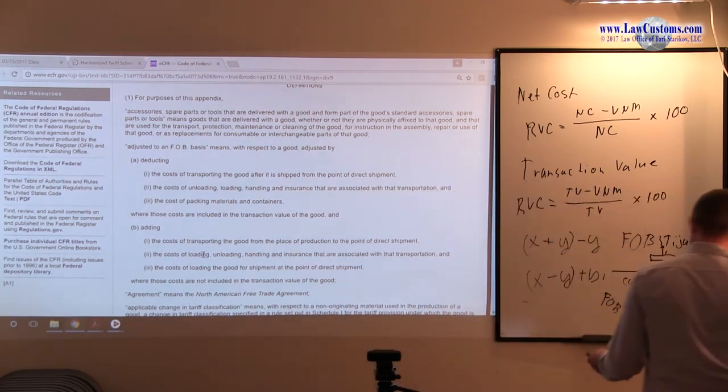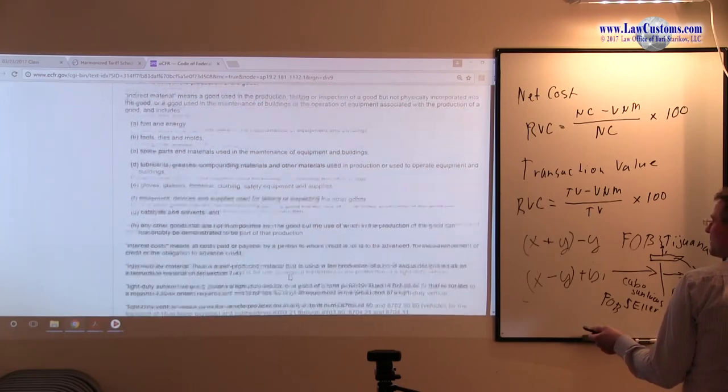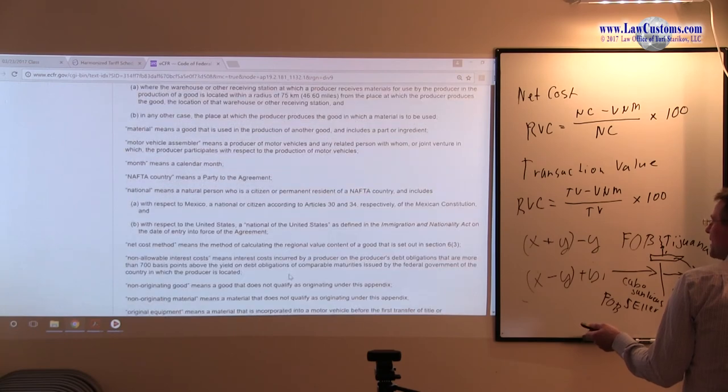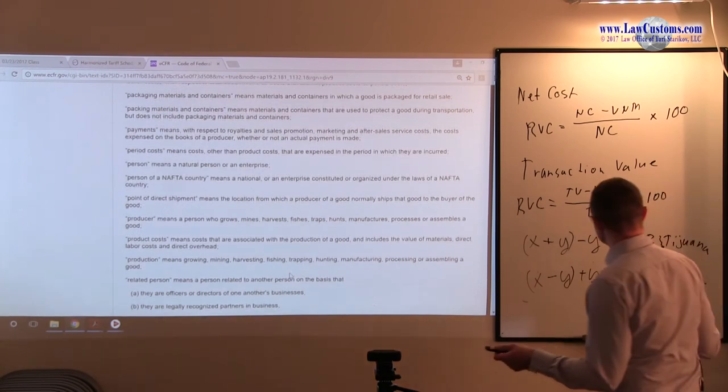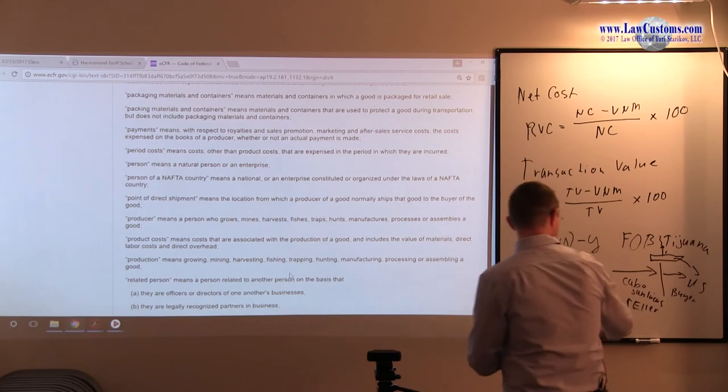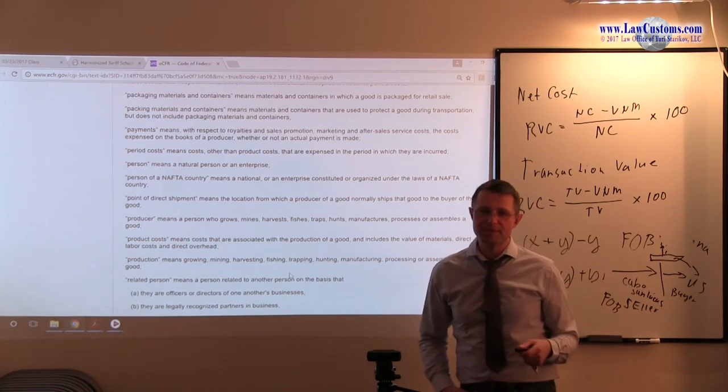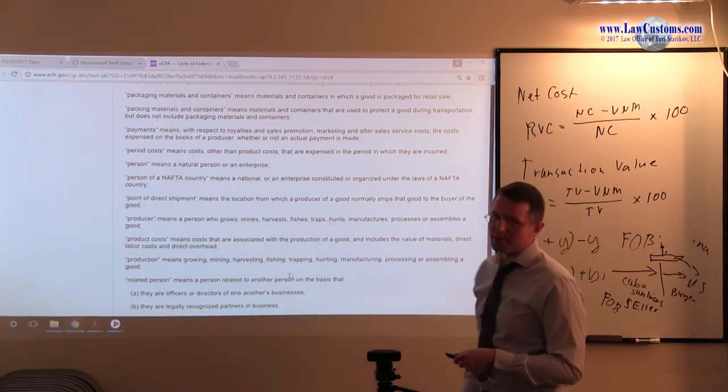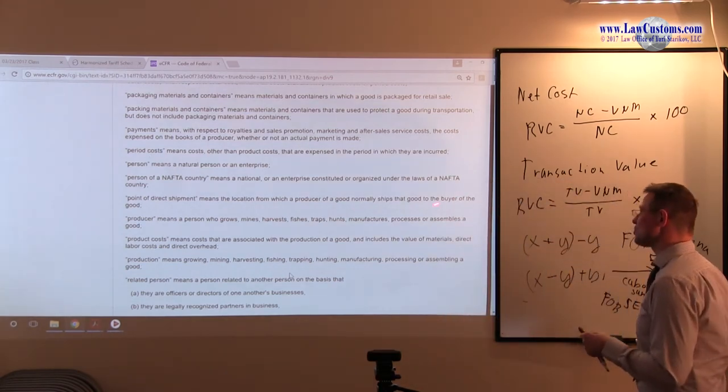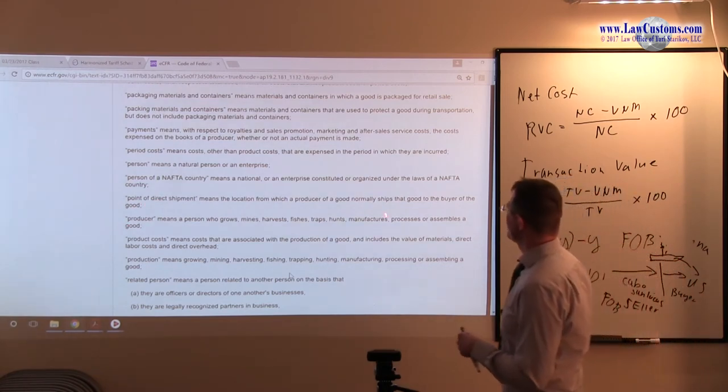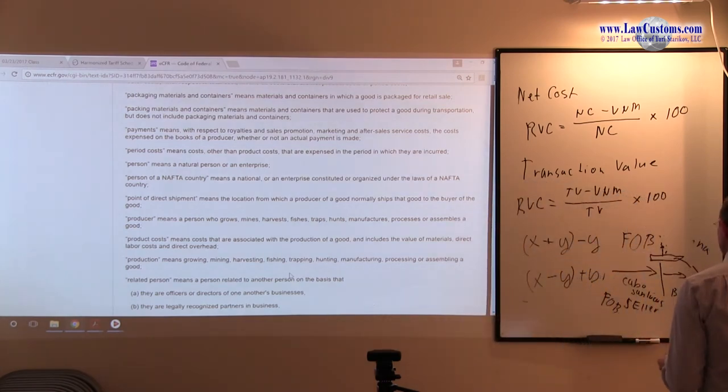Direct shipment is also defined, because the point of direct shipment is kind of a tricky concept. What's the point of direct shipment, right? We kind of understand that direct shipment would be the port of, not Tijuana, let's say, but port of Cabo San Lucas. Definitions in the appendix, part 181 appendix, also do a fine job of defining the point of direct shipment. It means the location from which a producer of a good normally ships the goods to the delivery, to the buyer of the good. That's for the adjustments.